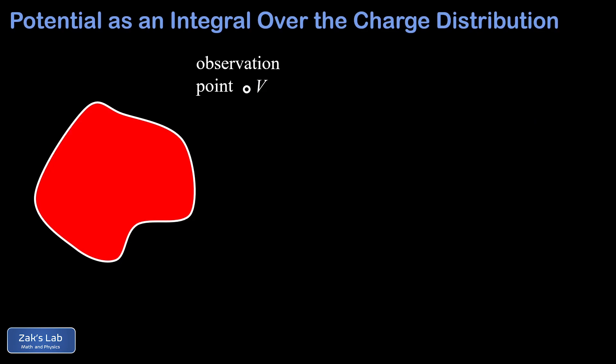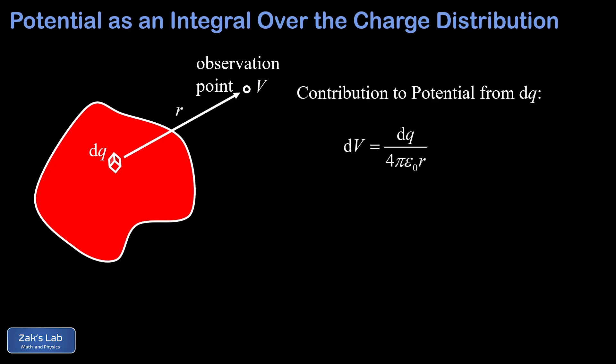We almost already have an answer for a continuous distribution of charge, because a continuous distribution is nothing more than an infinite collection of infinitesimal point charges. We take our continuous distribution and highlight one charge increment dq at a distance of little r from the observation point. Applying our formula for the potential due to a point charge gives dV = dq over 4πε₀r, an infinitesimal contribution to the total potential. Our little dqs are infinitesimal and there are infinitely many of them.